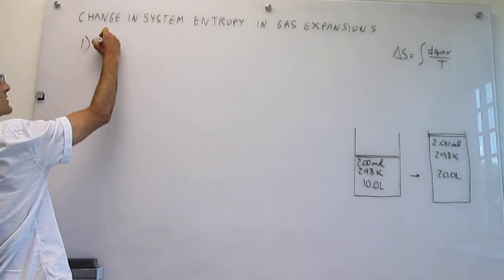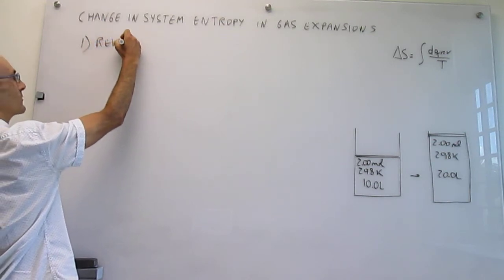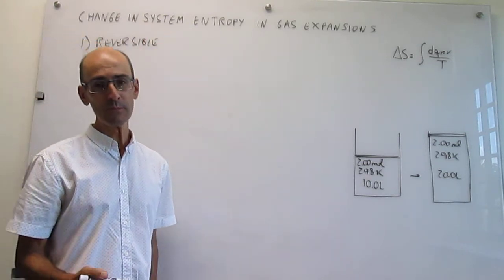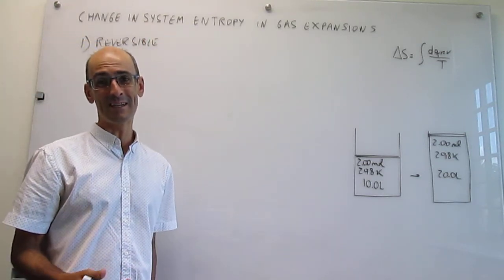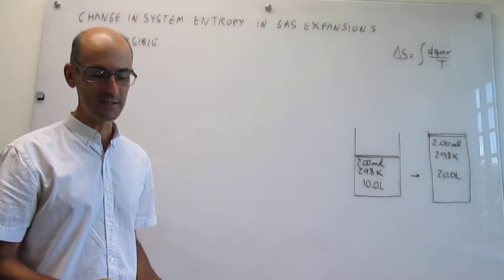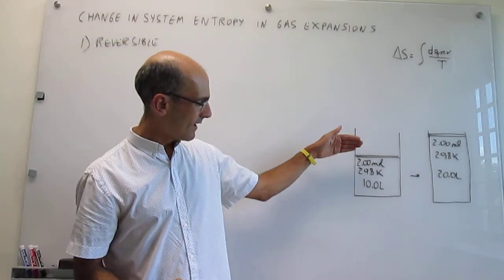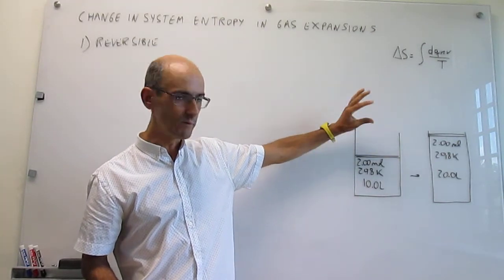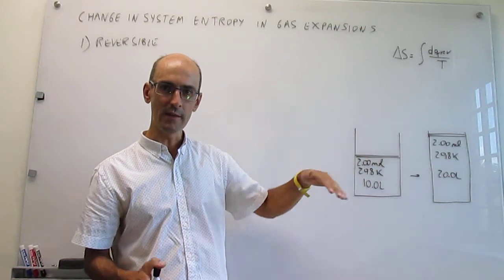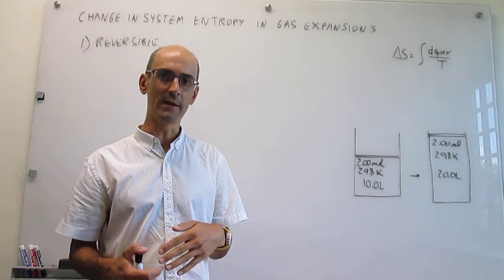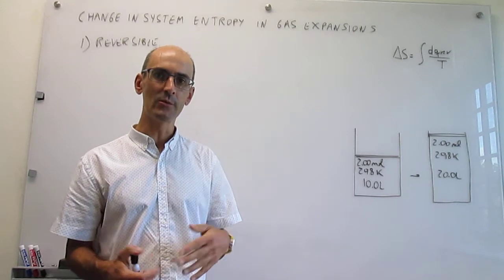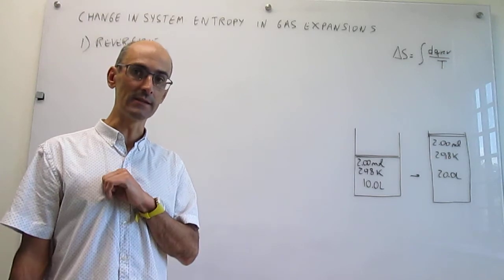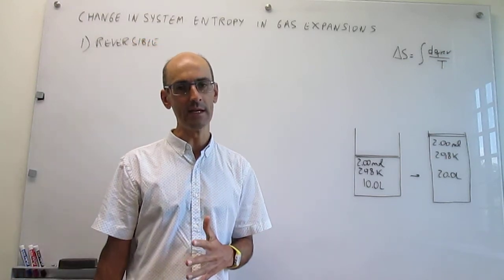Our first goal is to do this reversibly. Remember that a reversible gas expansion is the expansion that gives you maximum work. This is the process where we have an infinite number of infinitesimal masses on top of this piston, and we move one at a time so that the pressure of the gas is always equalized by the outside pressure. This would take an infinite amount of time, so it's an idealized process, but it's the one that gives you maximum work — that's why it's interesting.